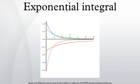For complex values of the argument, the definition becomes ambiguous due to branch points at zero and infinity. Instead of Ei, the following notation is used. In general, a branch cut is taken on the negative real axis and E1 can be defined by analytic continuation elsewhere on the complex plane.